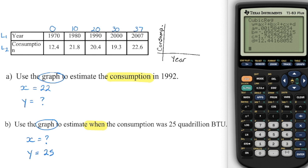Now for the questions — in both cases, they're asking us to use the graph, which is why I didn't feel the need to write down the equation. Looking at our sketch for the first question, we're asked to estimate consumption. Consumption is my Y value, so I'm looking for what Y is when we are in the year 1992. Because I entered X values starting from 1970, I need to calculate how many years after 1970 that is — which is 22 years.